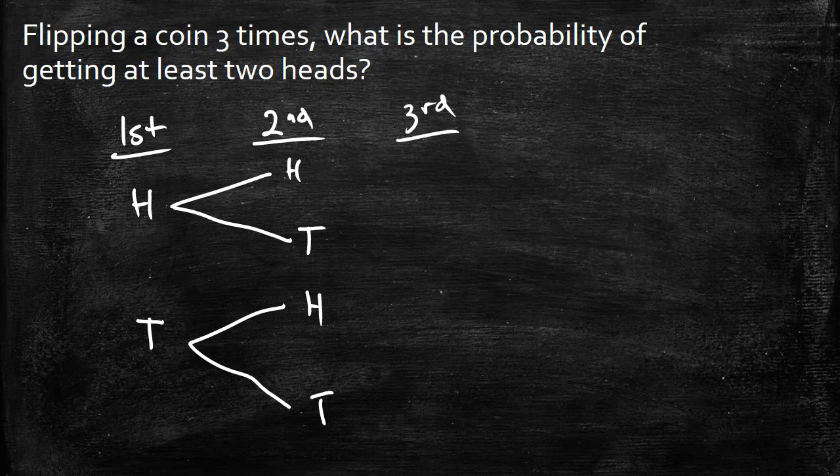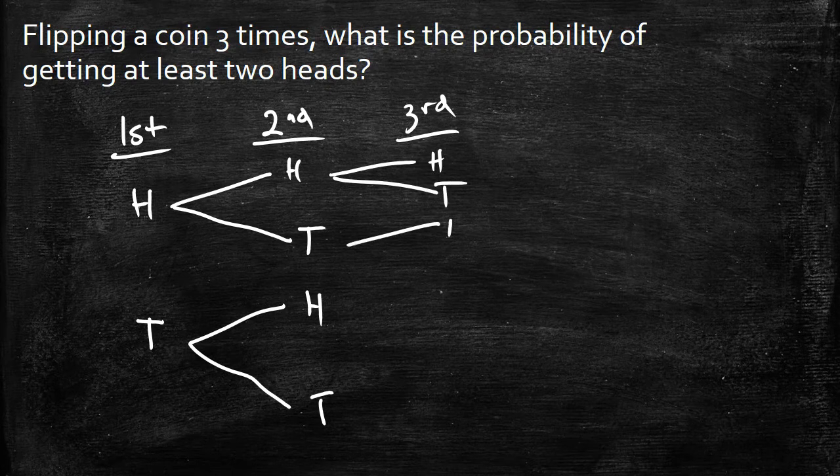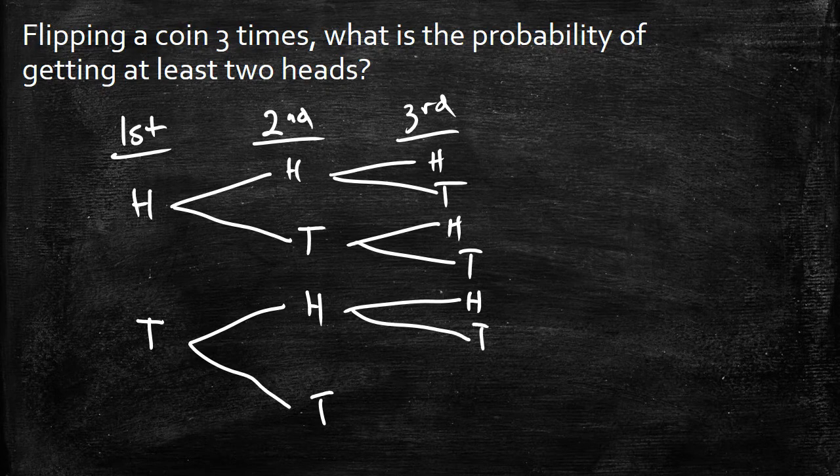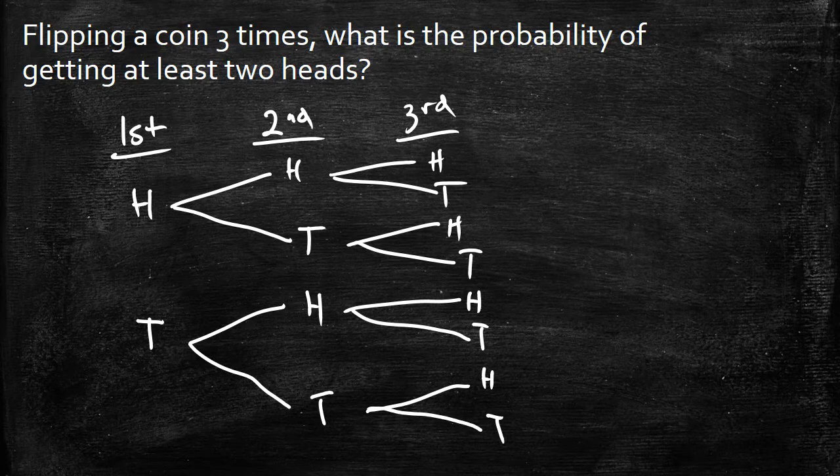And then let's say on our third flip, you can get either a head or a tail, and a head or a tail, and a head or a tail. And you start to see that this just gets really long and exhausting. And we'll find better ways to do this later on, but this is a great way to start things out.